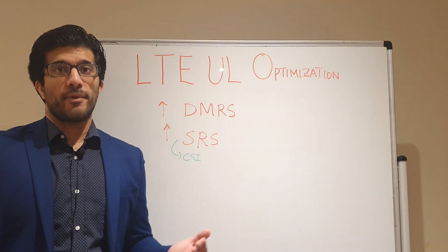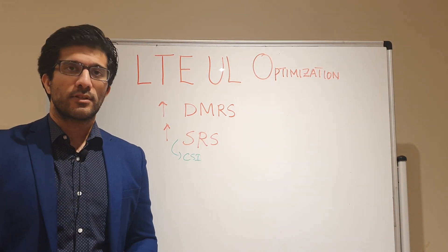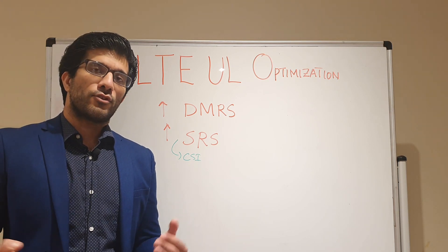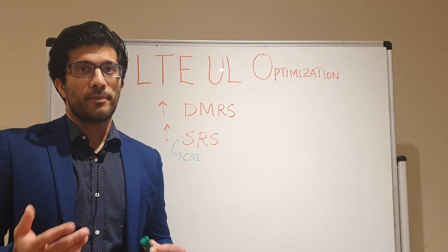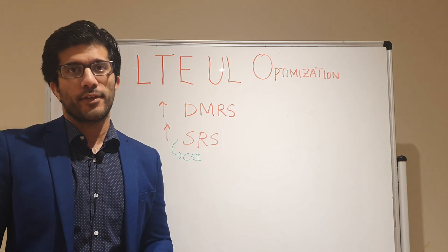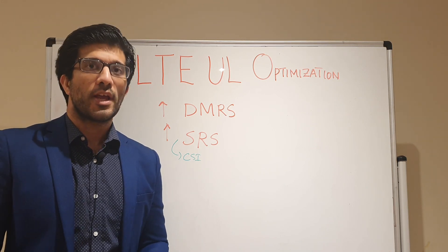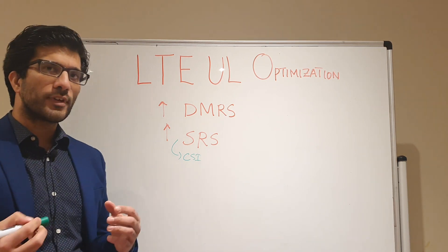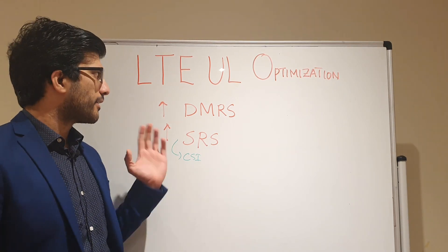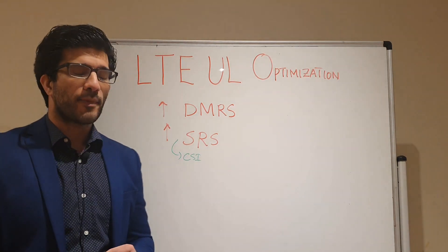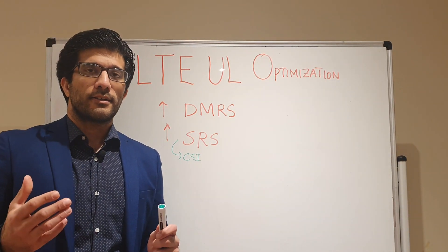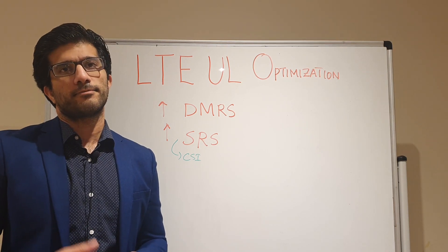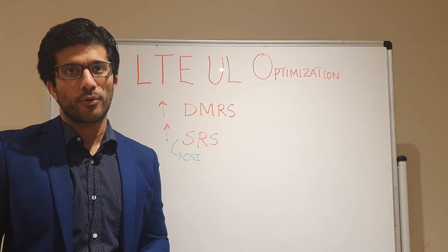If your DMRS performance or demodulation is better, then your retransmissions will be less and therefore your overall cell throughput will be better. In terms of dimensioning, DMRS is sent in every slot for your Physical Uplink Shared Channel.